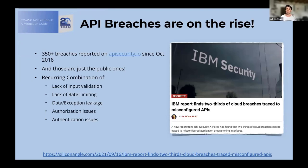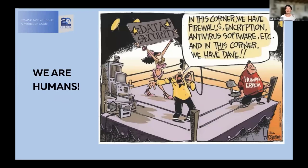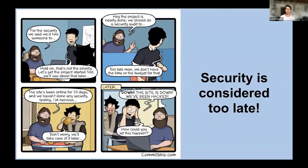So why is this happening? The first issue is that we're humans and we make human errors — that's why I talk a lot about automation and scaling. The second issue is that we still consider security way too late in the API life cycle. We create the code, make the APIs work functionally, and only then think about security.